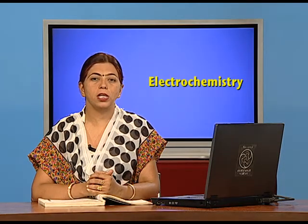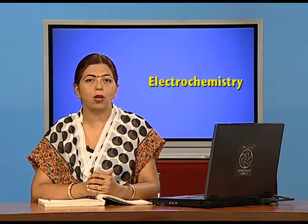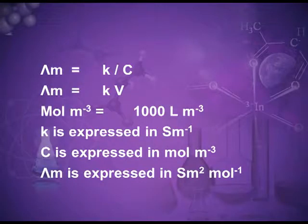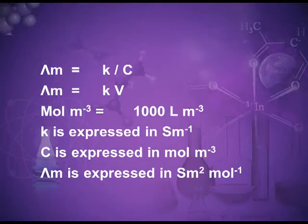The symbol for molar conductivity is lambda with subscript m. Mathematically, lambda m, or molar conductance, is related to kappa (conductivity) by: lambda m equals kappa divided by C, where C is the concentration expressed in moles per liter. Lambda m is also equal to the product of conductivity and volume, that is kappa times V. Substituting the units of kappa and volume, we get the unit of lambda m as siemens meter squared per mole.